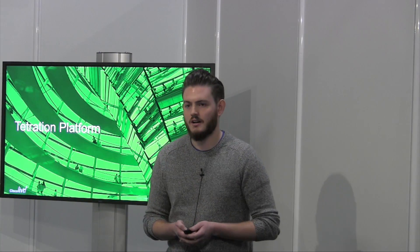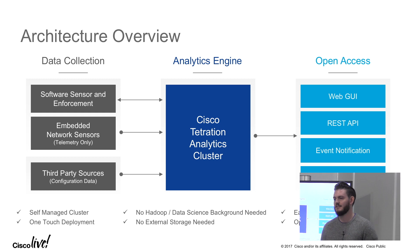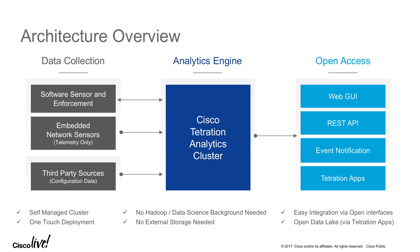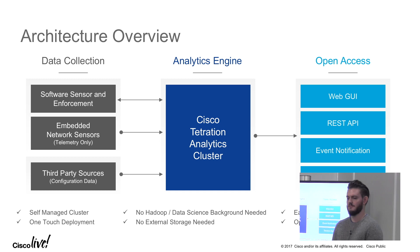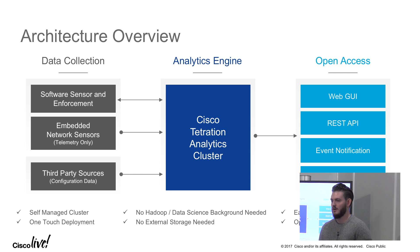The Tetration platform has three main layers. On the left is the data collection layer. We have two main points to capture telemetry: a software sensor and a hardware sensor. The hardware sensor is inside the Nexus 9000 switches — it captures flow data at very fast export intervals and annotates it with switch-specific context information. The software sensor is a very lightweight binary that sits inside the OS of your workloads and streams flow data, and can also annotate that data with host-specific information such as processes and users.